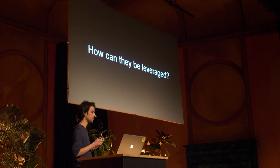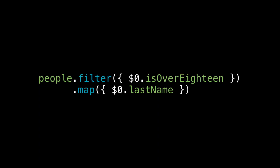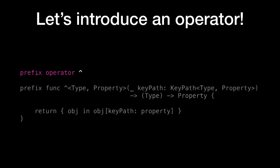Let's see how they can be leveraged with an example. We're all familiar with this kind of Swift functional programming code using closures. Let's see if we can make it work with a KeyPath. For this we're going to introduce an operator — a very short prefix operator, just the caret character. It's going to take a KeyPath invoked on a type to get a property, and return a function that takes a type and returns a property. So we are mapping from KeyPath to getter functions.